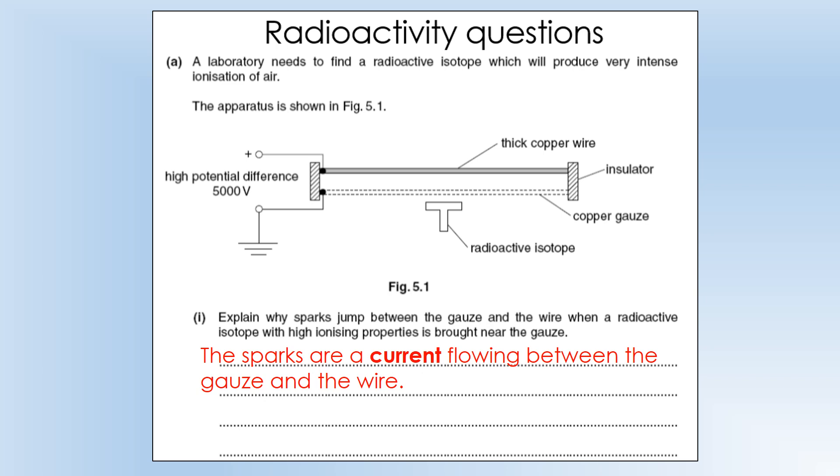The radioactive isotope is there to create the charge carriers and it does that by causing ionization. So it creates free electrons and it leaves behind positive ions, both of which are charged and will move towards their respective plates.